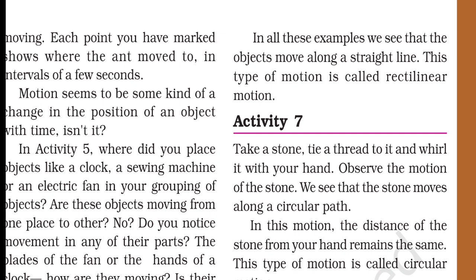In all these examples we have seen that the object moves along a straight line. This type of motion is called rectilinear motion — when an object moves in a straight line, that motion is called rectilinear motion.